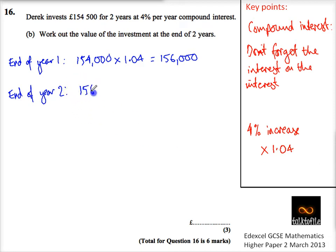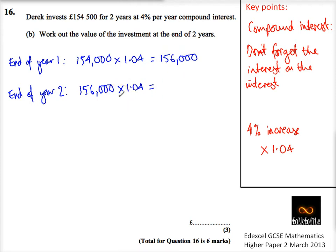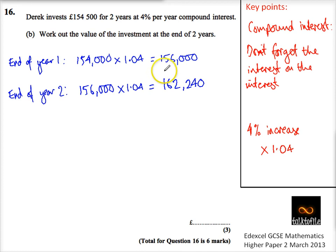At the end of year two, I've got the 156,000 in my account and I'm going to times it by 1.04 again. It's not going to go up by the same amount, because I've actually got a little bit more in my account — and that extra interest I've earned, I'm actually going to earn interest on that for the second year too. So I take my 156,000, times it by 1.04 again, and I find I get 162,240 pounds.